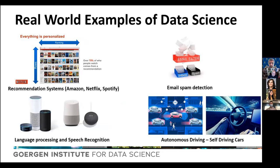If we look at the applications of data science, we don't need to look too far — it's all around us in everyday life. On the top left is recommendation systems: how you interact with Netflix, Spotify, and Amazon, where systems analyze your user behavior — what you watch or buy — and make recommendations based on what you're likely to enjoy. These systems are essentially data science at play, evaluating your preferences and taste and making recommendations based on the data.